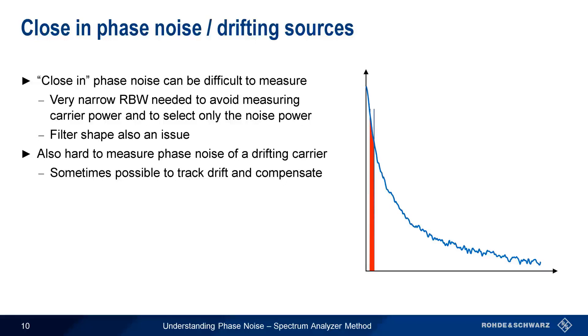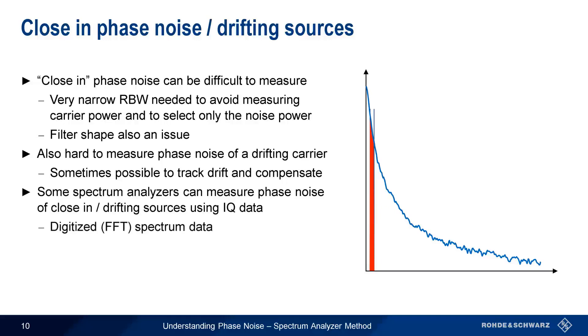Modern spectrum analyzers can avoid some of these issues by measuring phase noise using so-called IQ data. IQ data is a digital representation of the spectrum and is obtained by means of the fast Fourier transform. Measuring with IQ data can improve the stability and the accuracy of phase noise measurements, particularly for close-in measurements or for drifting sources.